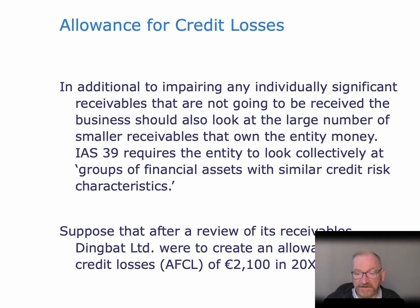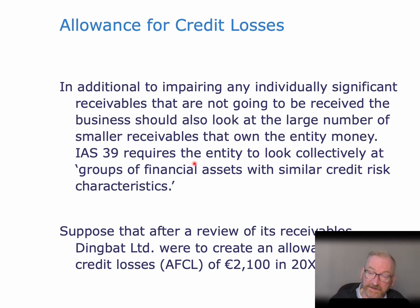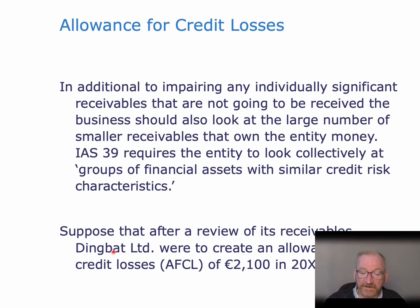In addition to impairing individually significant receivables, the business should look at the large amount of smaller receivables. You can't ignore the fact that some people are not going to pay — you have to make some kind of allowance based on the statistical idea that some customers won't pay. The rules have become very complex about how you actually do that, but all we're going to say is that somehow you come up with an allowance for credit losses, AFCL, of 2,100 in 20X4.